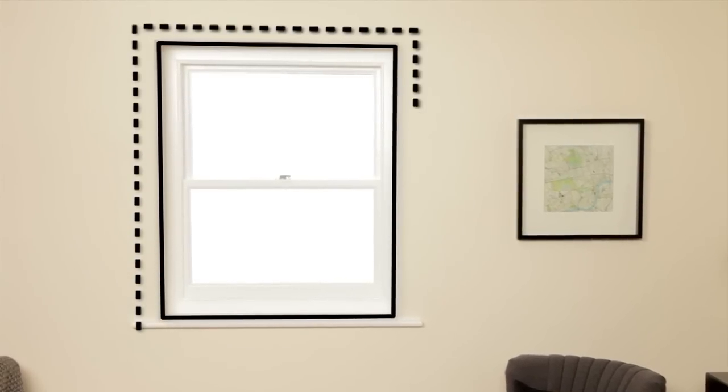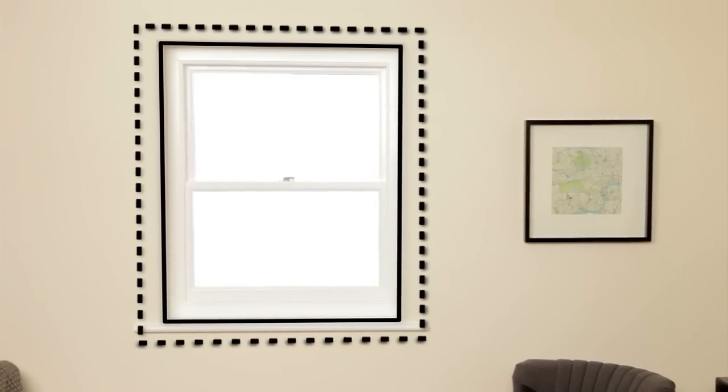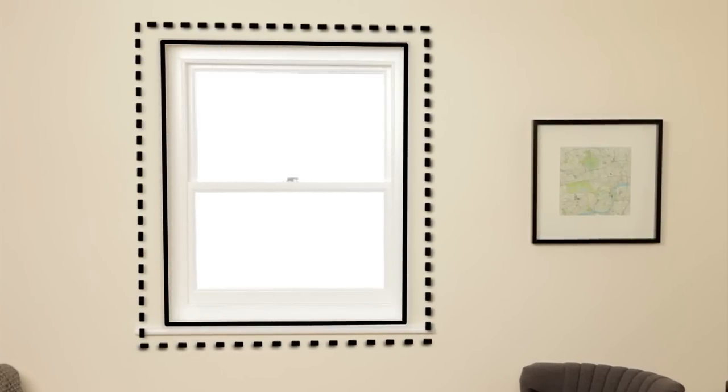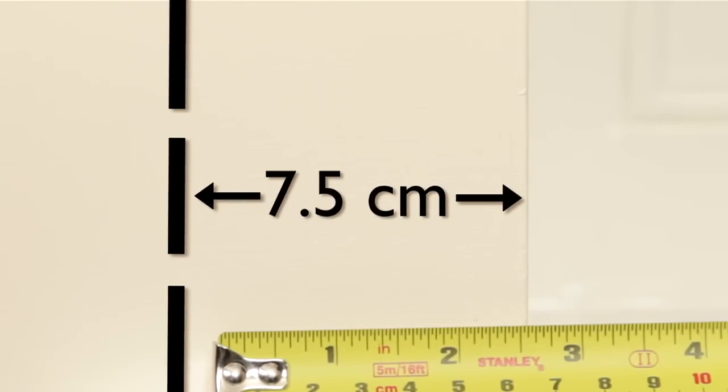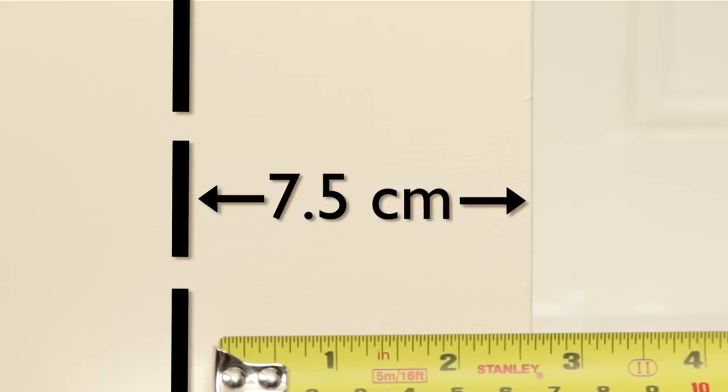If you've decided you want exact blinds with the blinds hanging outside the recess, the process is exactly the same but this time allow an overlap of at least 7.5 centimeters all the way around the recess.